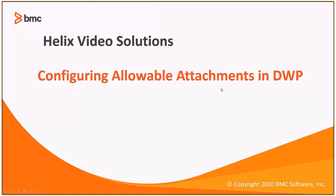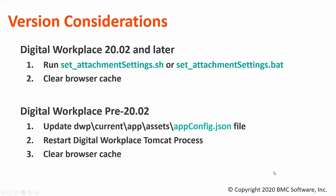Hello. In this video, we are going to discuss how to configure the allowable attachment types by their extensions in DWP. There's a little change in 2002 compared to previous versions. In 2002, you use the tenant config scripts to set the values, and that's detailed in the documentation, and we're going to run through that as well.